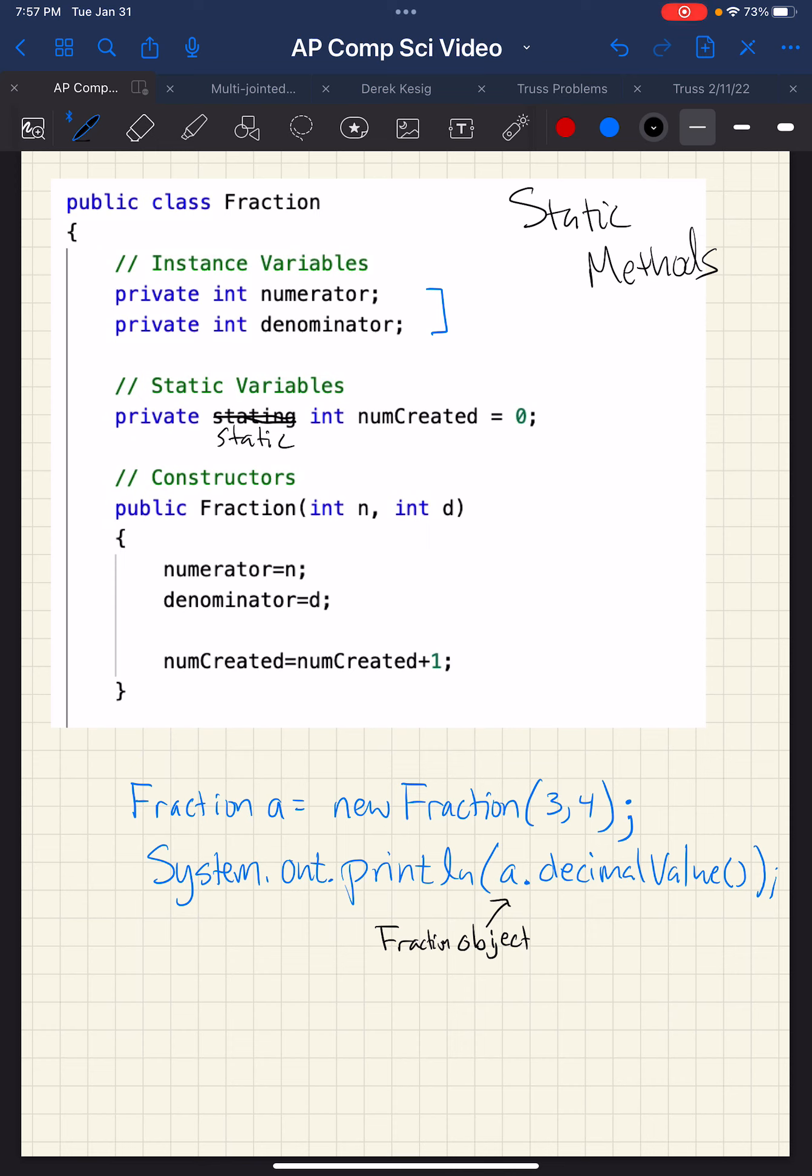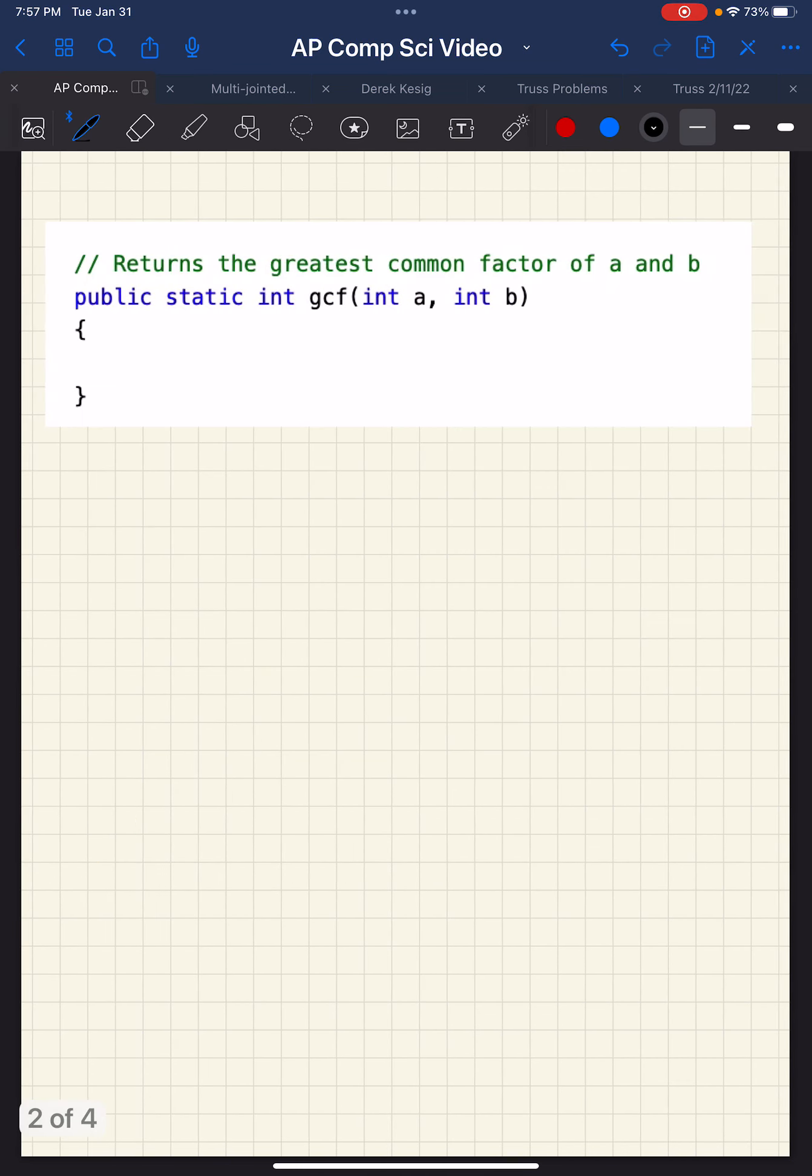But you could have static methods that you'd use in the class that are not methods of any one class. So for example, if we were trying to simplify a fraction, you might have a static method greatest common factor that just takes two integers and returns the greatest common factor. It doesn't have access to any particular fraction, but you might write that to help you write a simplify method.